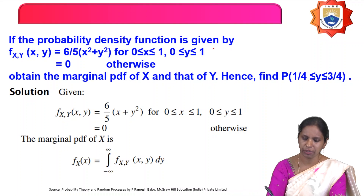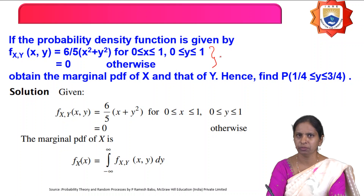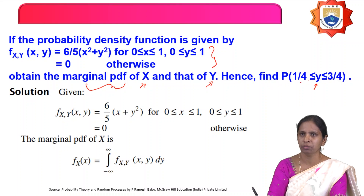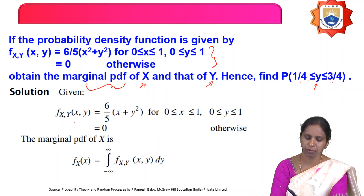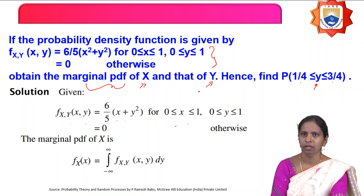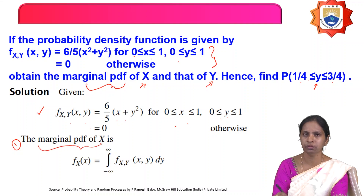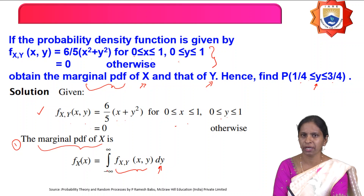They have given the joint probability density function. We have to calculate the probability that the random variable y takes values from 1/4 to 3/4. To calculate the marginal density function of x, we integrate the joint density function with respect to y over the limits minus infinity to infinity.